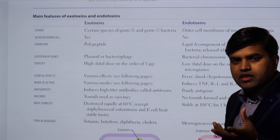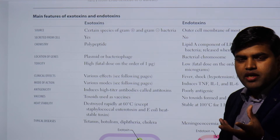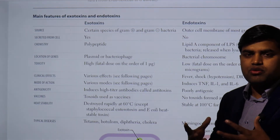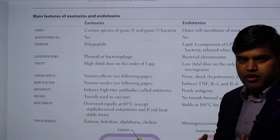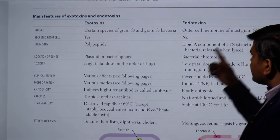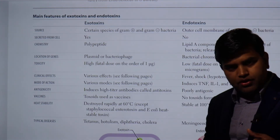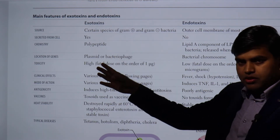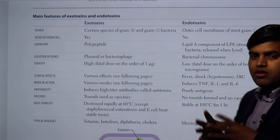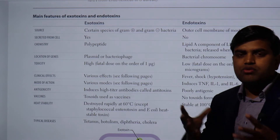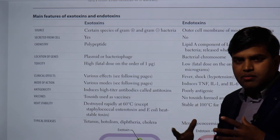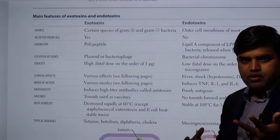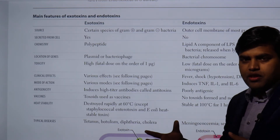Toxicity is high in the case of exotoxin — a small amount released into the environment causes severe damage to your body. Endotoxin is less toxic in comparison; it requires a large amount to activate three mechanisms: macrophage activation, complement pathway, and tissue factor activation, which we'll discuss in the next lecture.